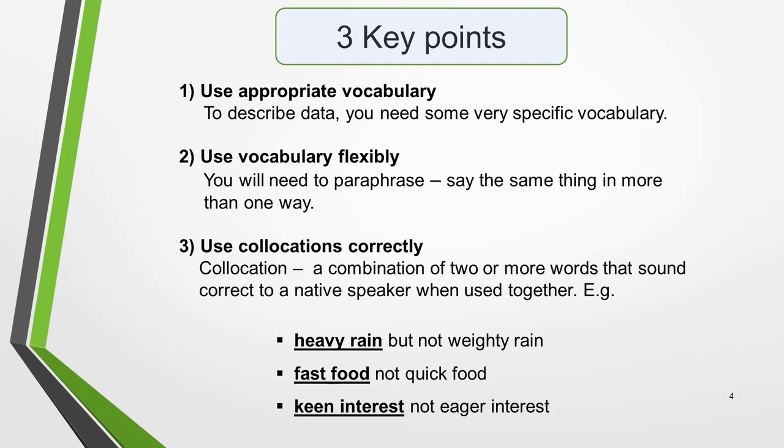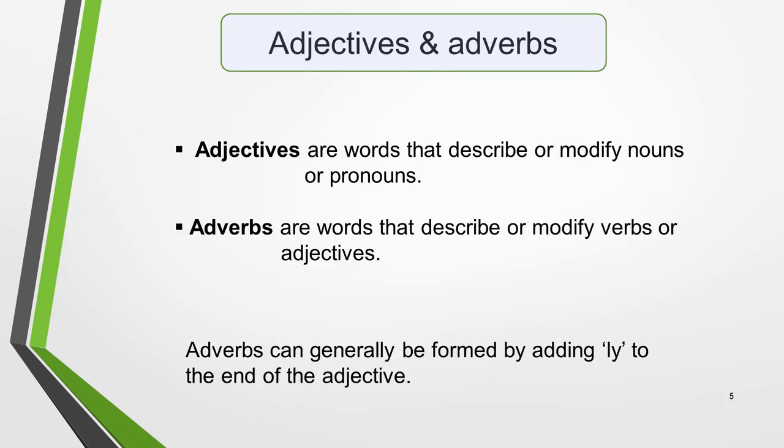Thirdly, you must use collocations correctly. The marking criteria specifically mentions the correct use of collocations as something you'll be assessed on. A collocation is a combination of two or more words that sound correct to a native speaker when used together. The word combination often doesn't work if you try to replace the first word with a synonym — for example, we say 'heavy rain' but not 'weighty rain', 'fast food' but not 'quick food', and 'keen interest' not 'eager interest'. My advice is to only use collocations you're 100% sure are correct.